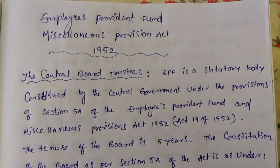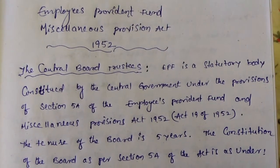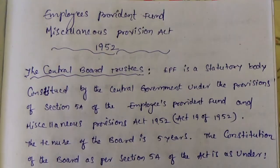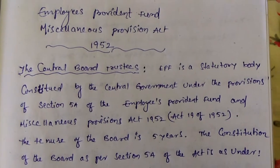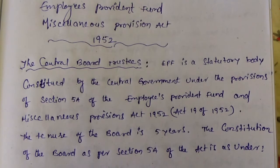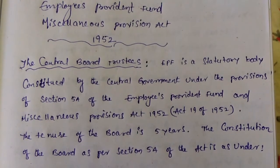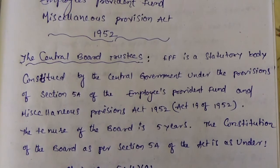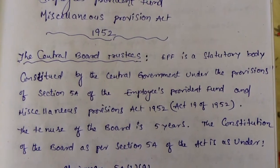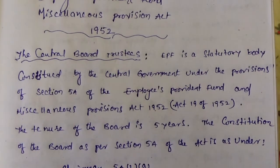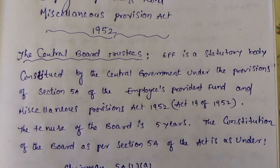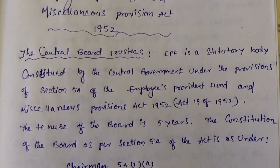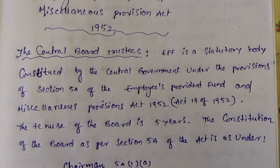In this EPF MP Act 1952, we are giving the Central Board of Trustees, Executive Committee, and Regional Committee particulars. The Central Board of Trustees EPF is a statutory body constituted by the Central Government under the provisions of Section 5A of the Employees Provident Fund and Miscellaneous Provisions Act 1952, Act 19 of 1952. The tenure of the Board is 5 years. The constitution of the Board is as per Section 5A of the Act.